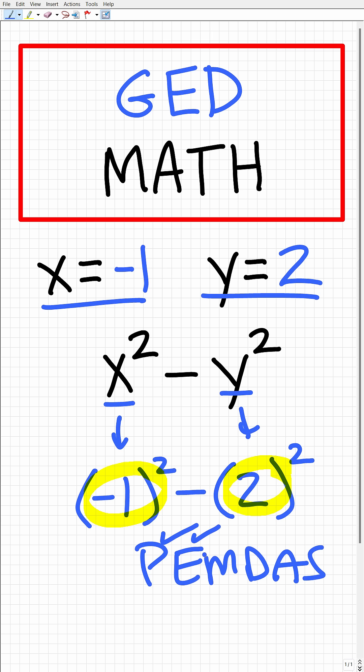P stands for parentheses, E stands for exponents or powers, then any multiplication and division, whatever you see first from left to right, and then any addition or subtraction, whatever you see first from left to right. So here we have exponents or powers - these little twos are called exponents. We need to do these first and then subtraction last.